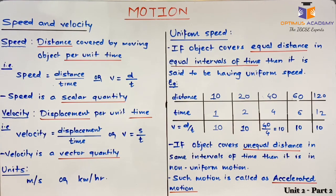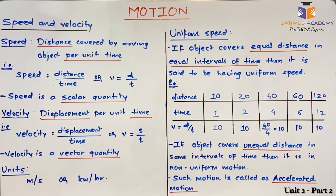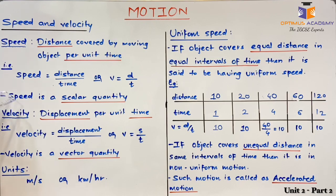Now pay attention that speed depends on the value of distance, and you can recall that distance is a scalar quantity — distance does not require direction, it just requires magnitude. As speed depends on distance, speed is also a scalar quantity, that is, speed requires only magnitude but no direction.